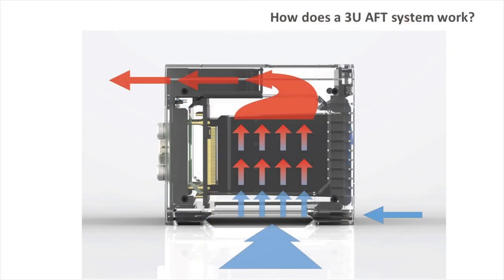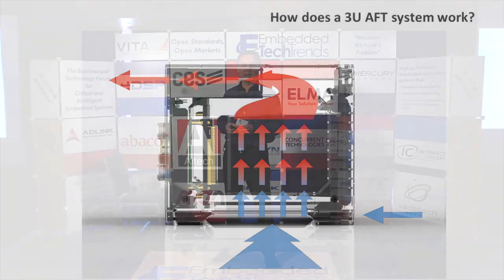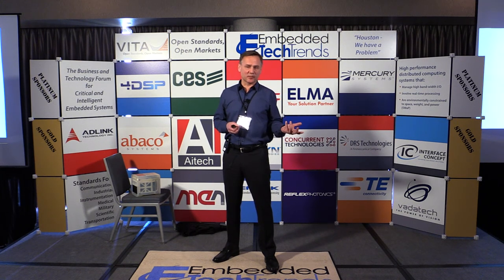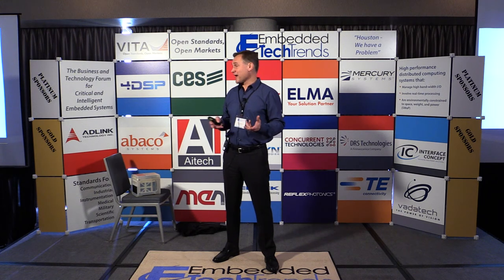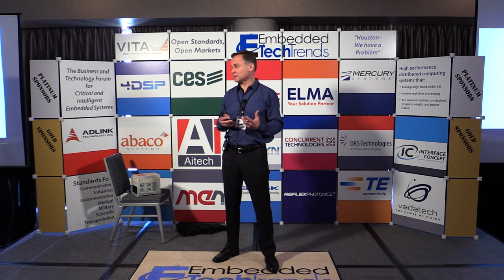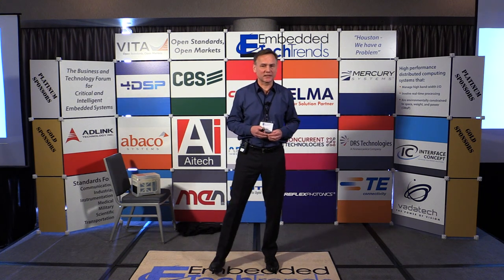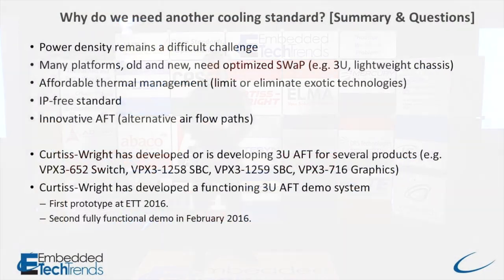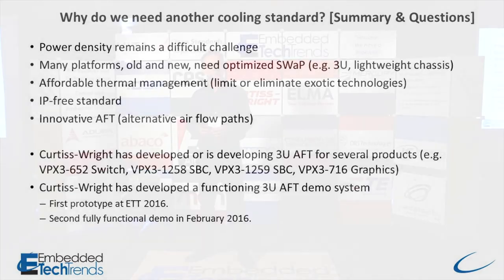One aspect we're really excited about, getting back to that power density discussion, is the ability to cool those power densities of around 200 watts per square centimeter. These 3U AFT approaches allow you to do that without implementing exotic and expensive cooling technologies like vapor chamber heat spreaders, nano spring thermal interface materials, or liquid flow through. AFT in both 3U and 6U implementations promises to be sufficient for the large majority of embedded processors for the foreseeable future, as well as the large majority of 3U and 6U COTS modules. I won't go through all these bullets, but this is a summary slide I put together with the main points — and this is the point at which I'll open it to the floor.